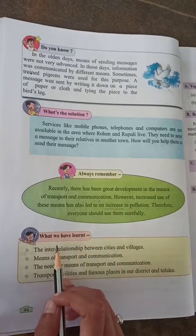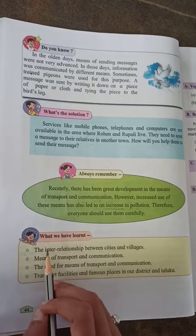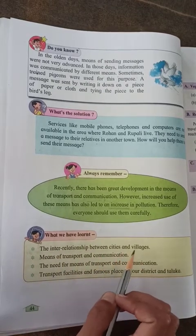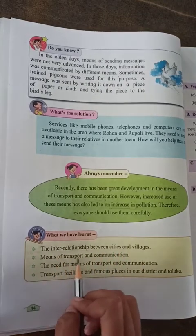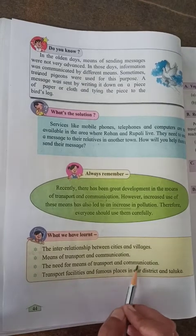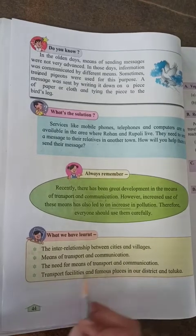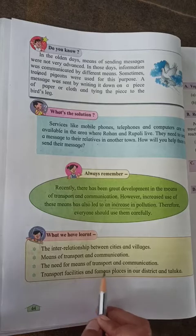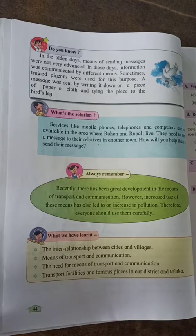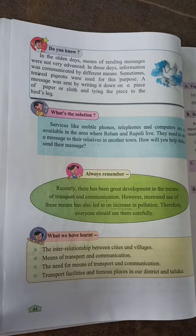What we have learned in this chapter: the inter-relationship between cities and villages, means of transport and communication, the need for means of transport and communication, and transport facilities and famous places in our district and taluka. In this way, you also revise this chapter and read it out. Thank you, see you.